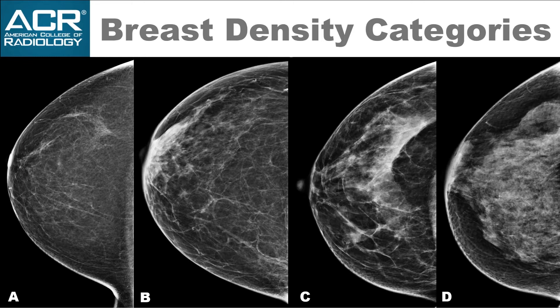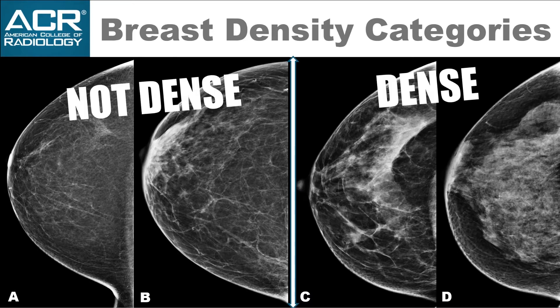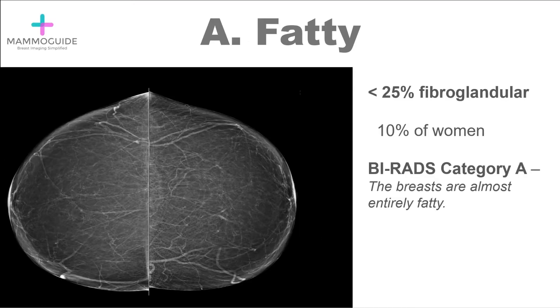When it comes to breast density, there are really only two categories that matter. An arbitrary line has been drawn between category B and C. A and B — fatty breast tissue and scattered breast tissue — are considered not dense. Any woman who has heterogeneously dense or extremely dense breast tissue is considered to have dense breast tissue.